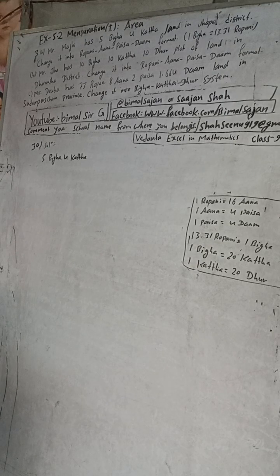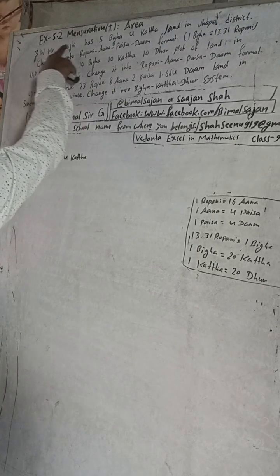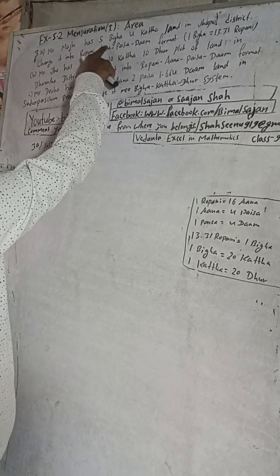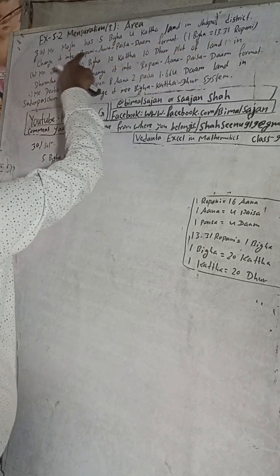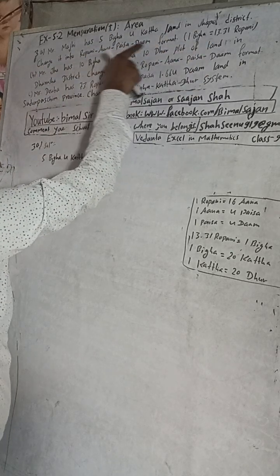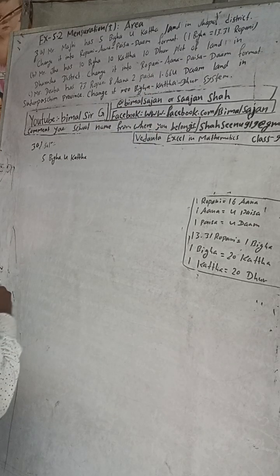Hi Class 9 and 10 students, welcome back to Bimal Sarji's YouTube channel. This is Question Number 3a, Exercise 5.2, Mensuration — First Part: Area, Vedanth Excel in Mathematics Class 9. The question is: Mr. Maji has 5 biga 4 katha land in Jhapa district. Change it into Ropani-Ana-Paisa-Dam format. One biga is equal to 13.31 ropani.